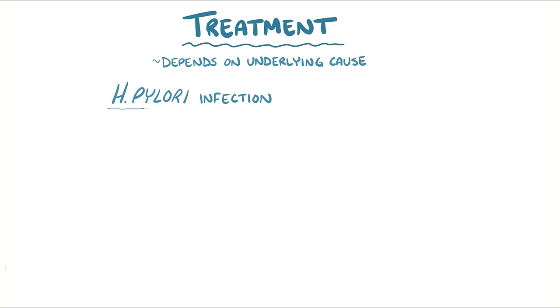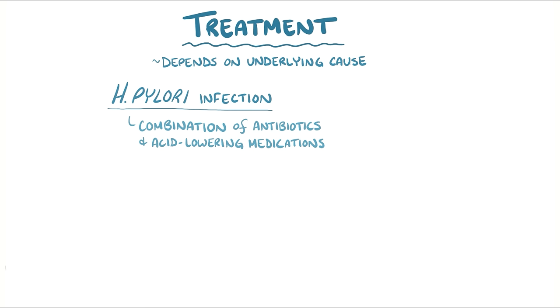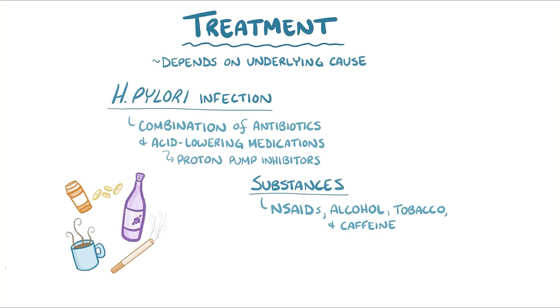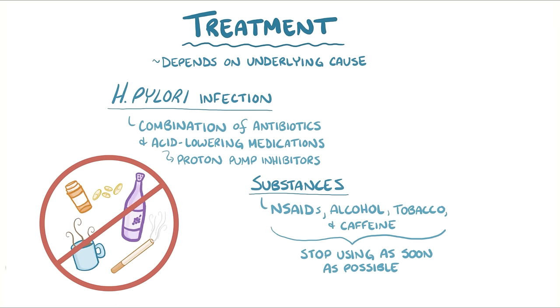Treatment of peptic ulcers depends on the underlying cause. If there's an H. pylori infection, it's usually cured with a combination of antibiotics and acid-lowering medications, specifically proton pump inhibitors. Substances that can worsen peptic ulcers include NSAIDs, as well as alcohol, tobacco, and caffeine, so it's best to stop using all of those as soon as possible. In really extreme cases, surgery might be needed.